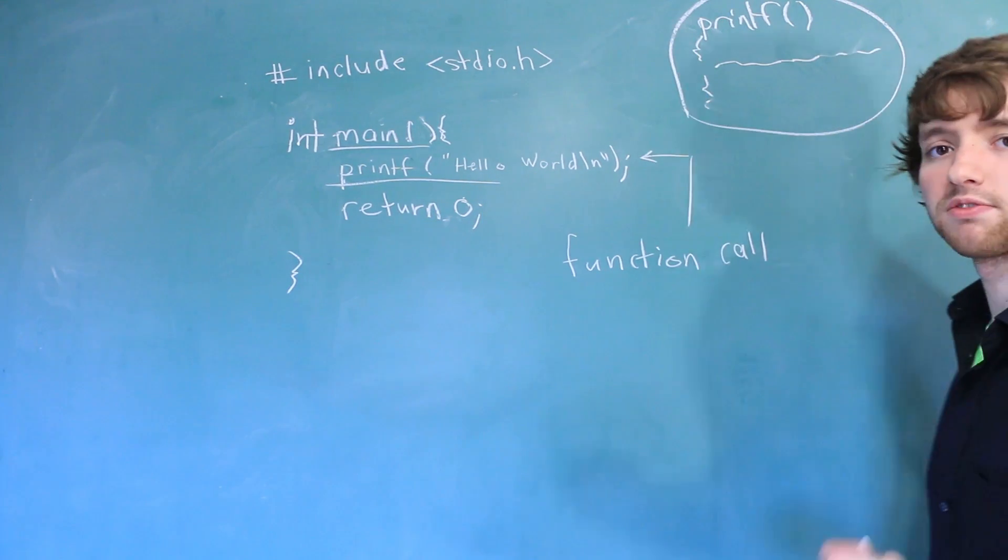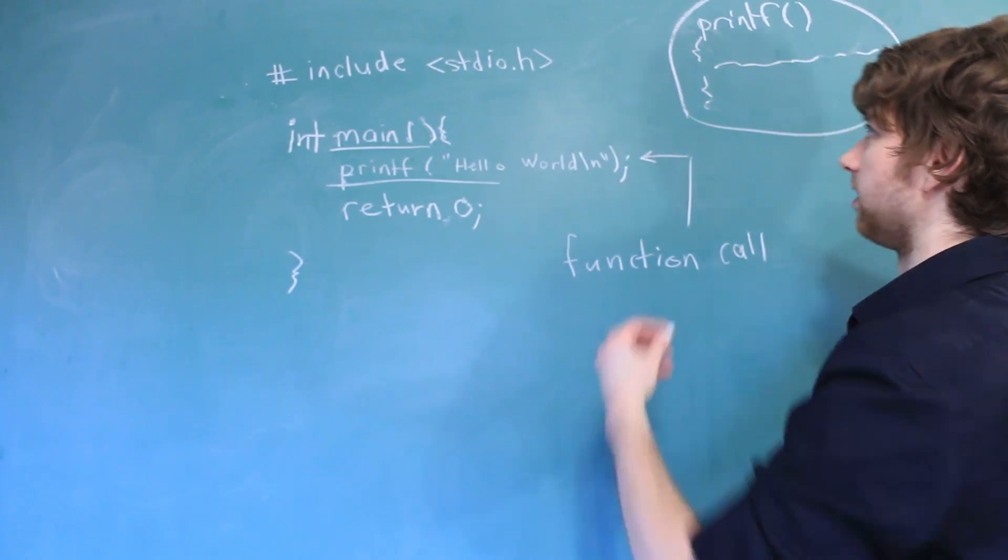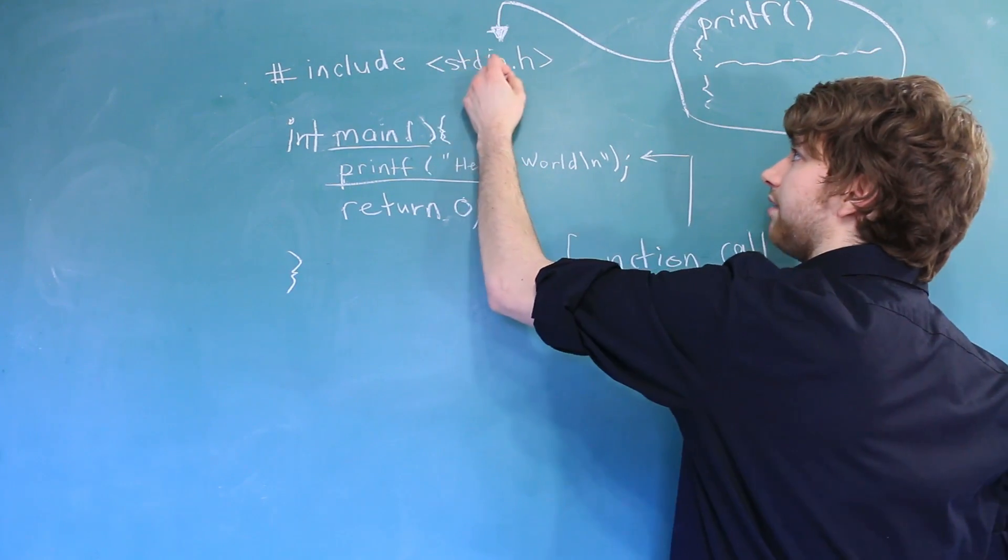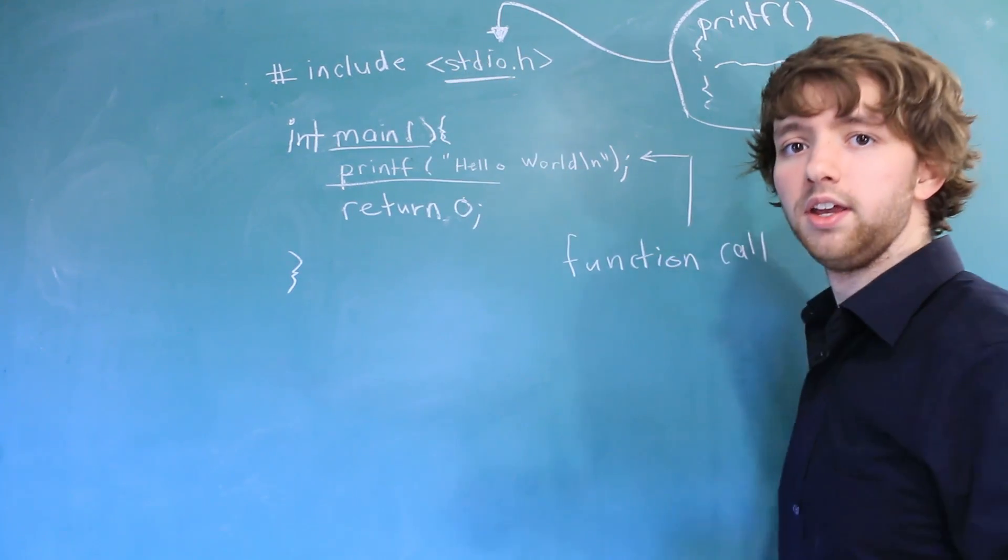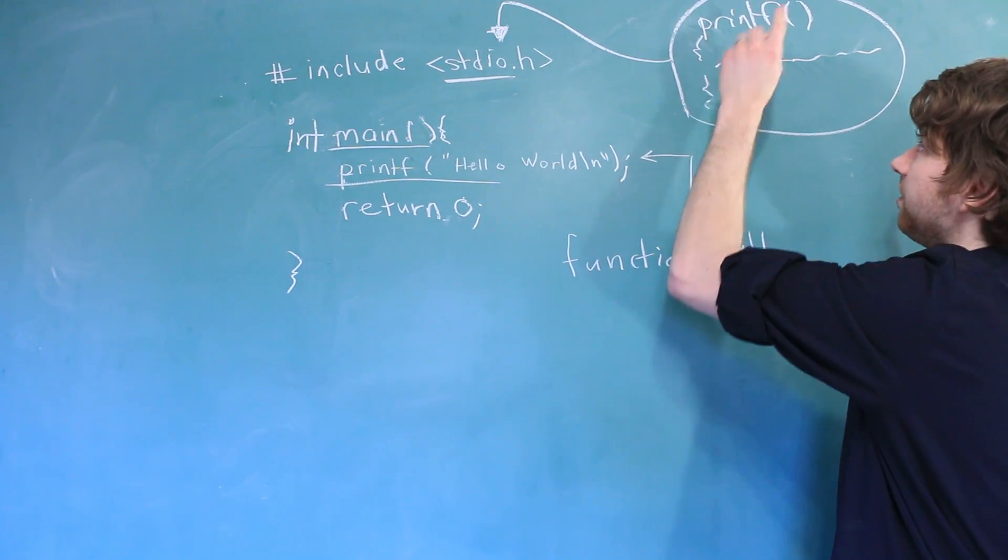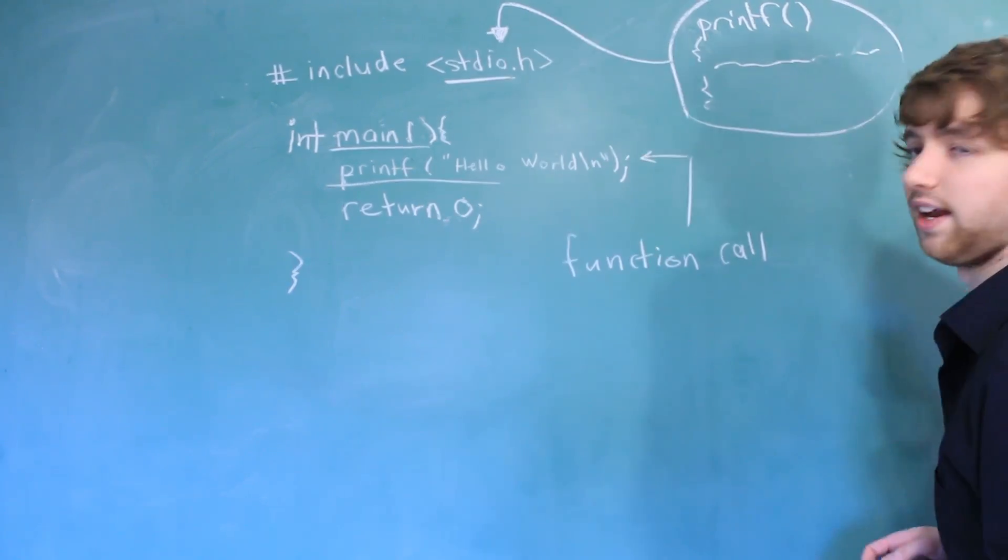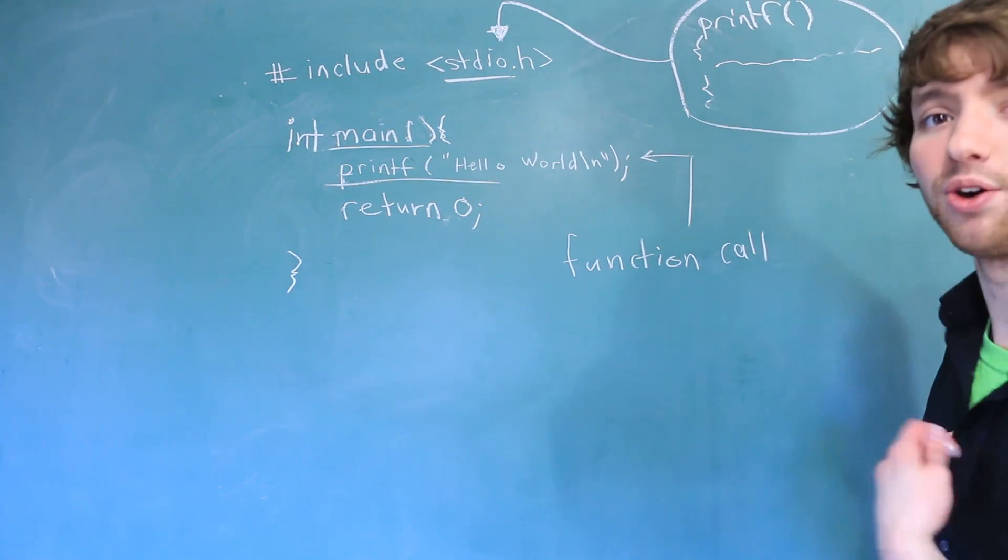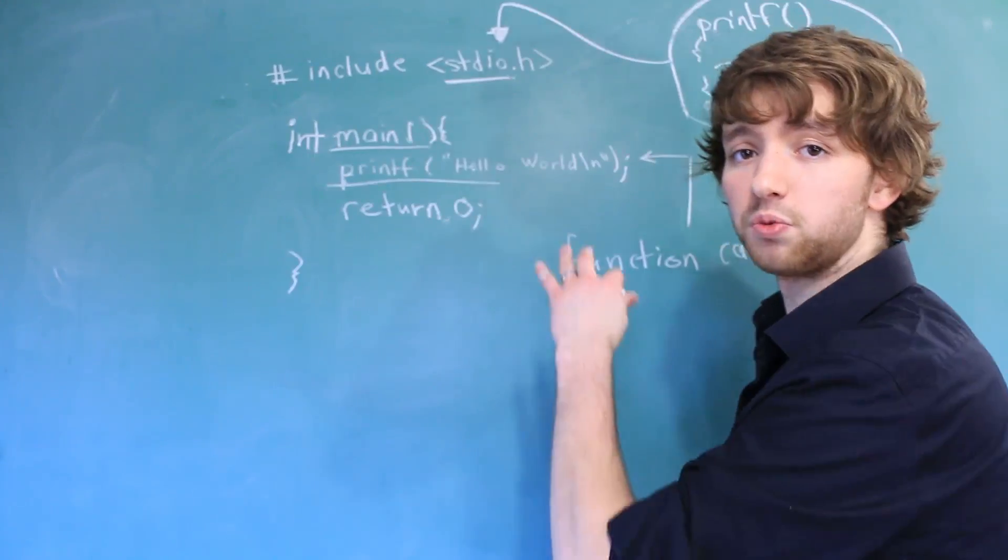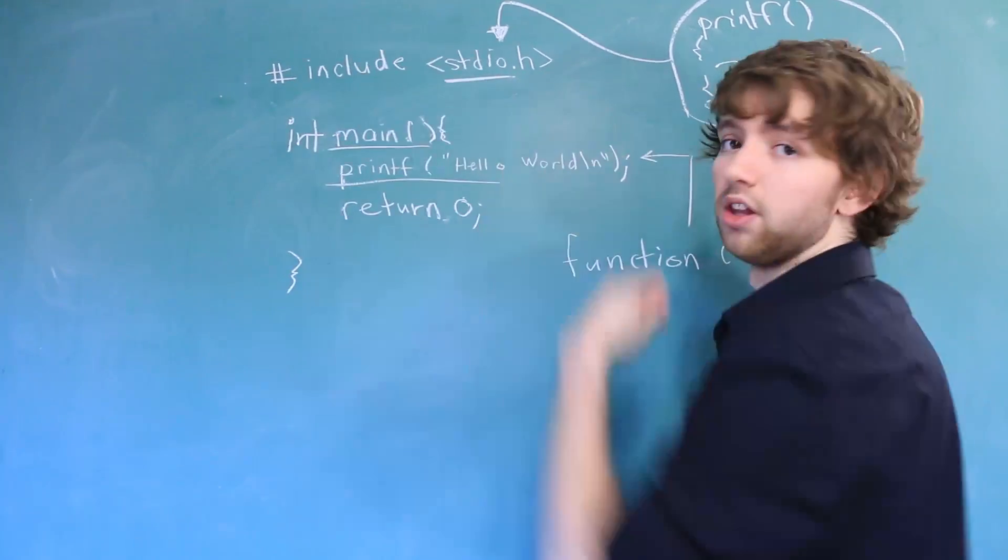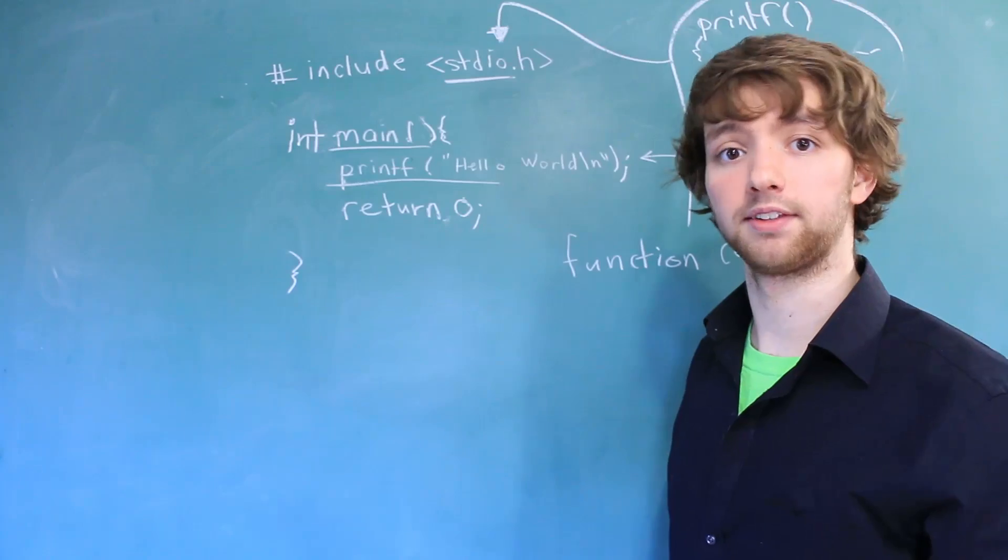Where is this code located though? Well, it actually comes from some library and that library is denoted right here. So you can see here we have standard IO and inside of this library, one of the functions that is available to us is the printf function. And I can assure you it's going to look more complicated than this. But thankfully, we don't have to write that function. That function was made available to us. All we had to do was include the library in our code to make it accessible to us.